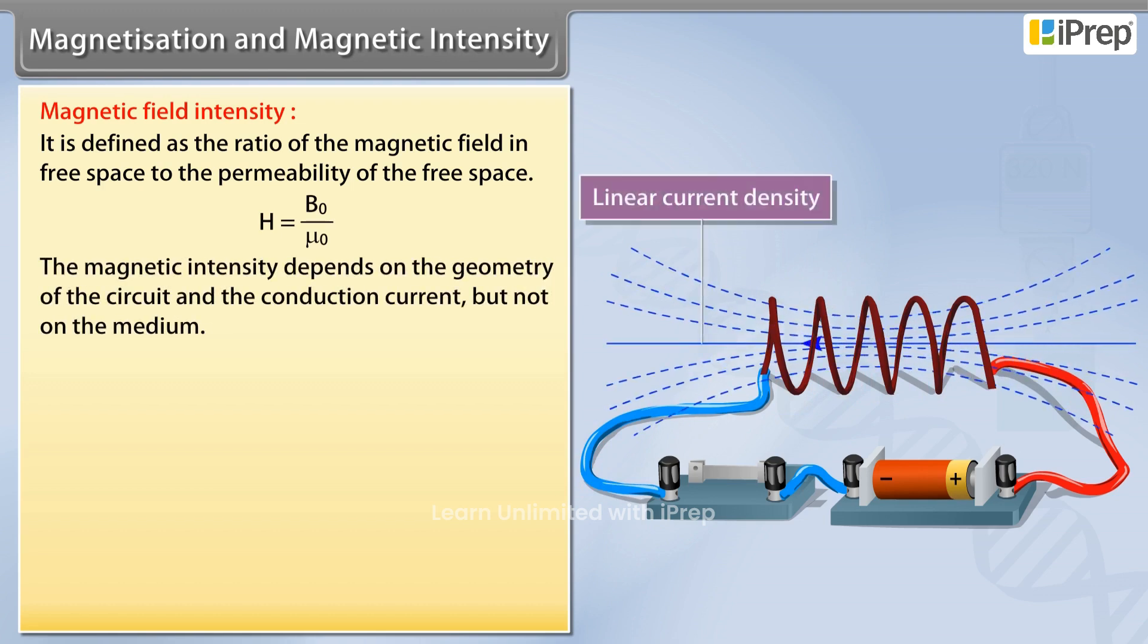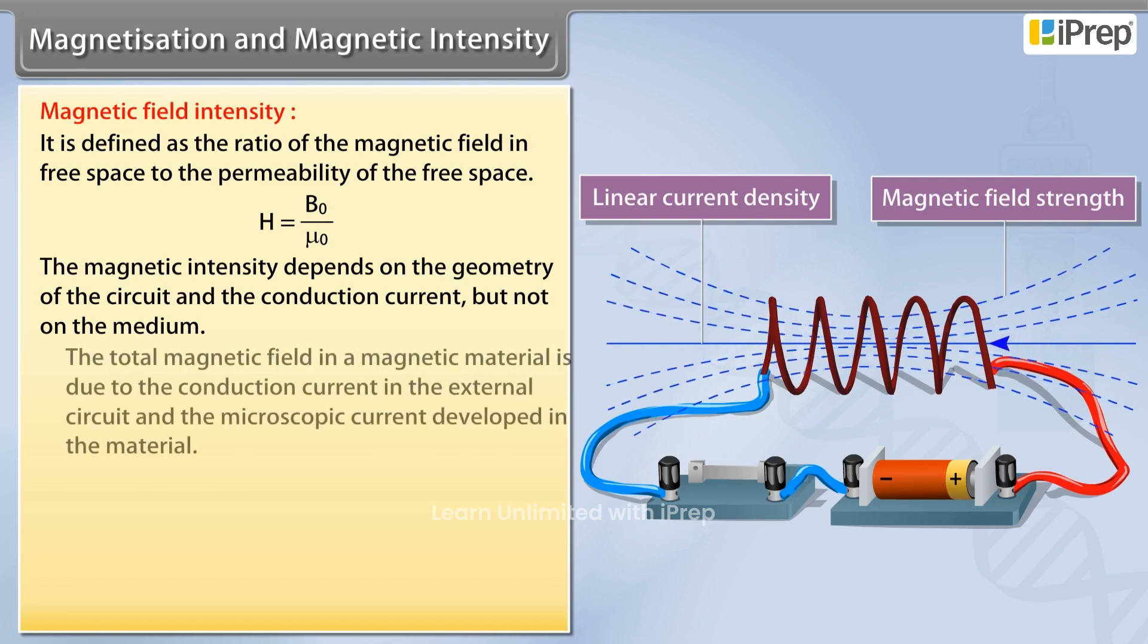The magnetic intensity depends on the geometry of the circuit and the conduction current, but not on the medium.